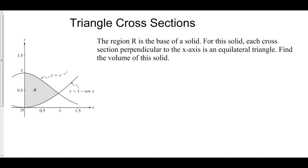The region R is the base of a solid. For this solid, each cross-section perpendicular to the x-axis is an equilateral triangle. Find the volume of this solid.